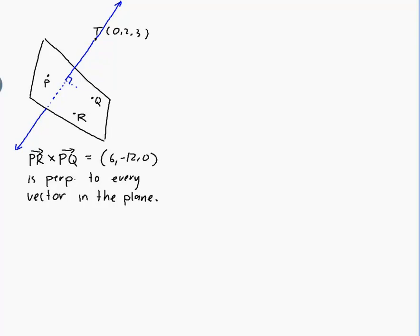So, the line would start at T and do multiples of that point. Now, I can divide that point by 6 and still get another vector pointing along my line. So, let's do that—a sixth. A sixth of (6, -12, 0) is (1, -2, 0).